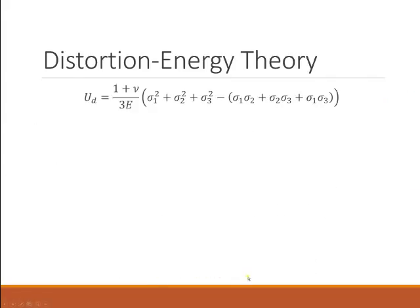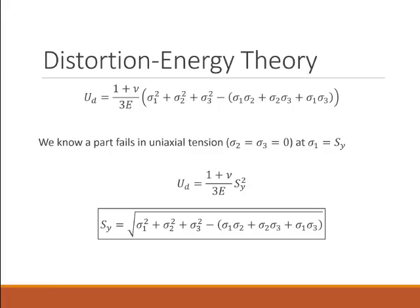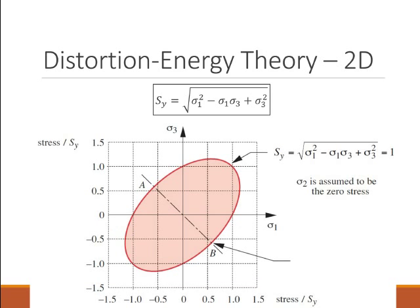Starting from this point, we look at a part that fails in uniaxial tension — a 1D case — and we recognize it's going to fail when sigma 1 is equal to the yield strength. Plugging that in, we can see that the yield strength is equal to this function. Now looking at distortion energy in 2D, we can see that it creates an elliptical shape, and sigma 1 and sigma 3 are related to each other.